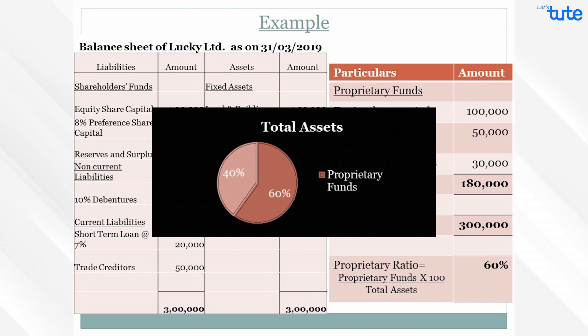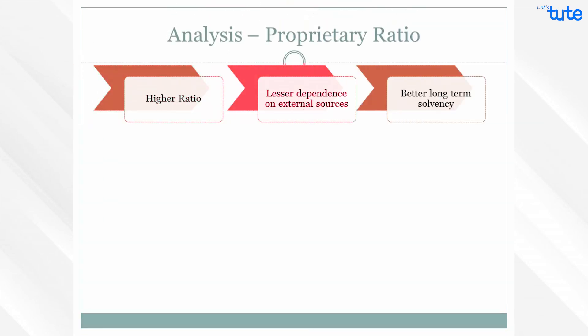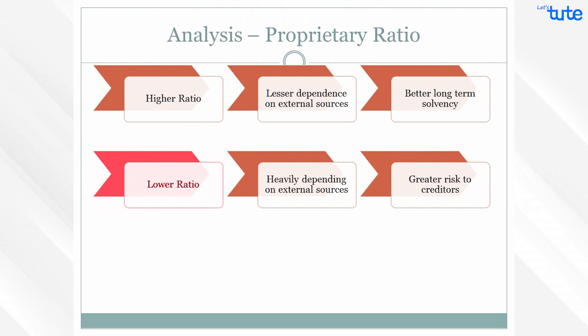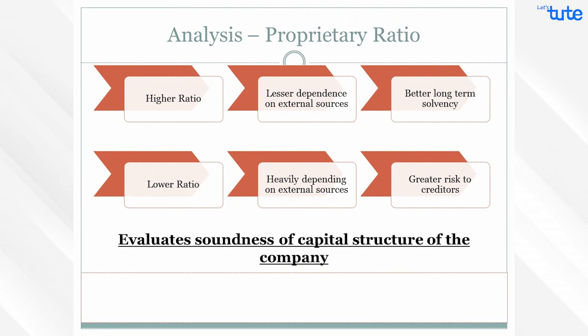A proprietary ratio of 60% means stockholders have contributed 60% of total assets and the remaining 40% has been contributed by outside creditors. A higher ratio indicates lesser dependence on external sources and a better long-term solvency position. A lower ratio indicates the company is heavily dependent on external sources for its operations, posing greater risk to creditors. So this ratio is used to evaluate the soundness of the capital structure of the company.